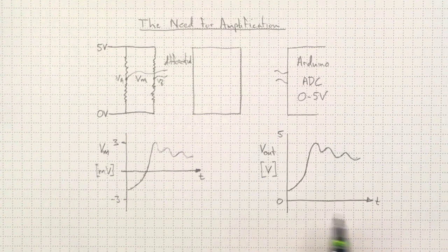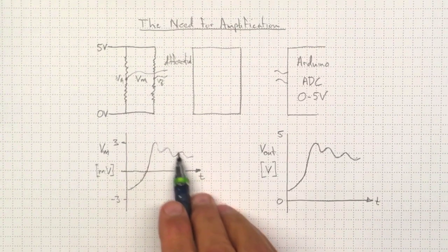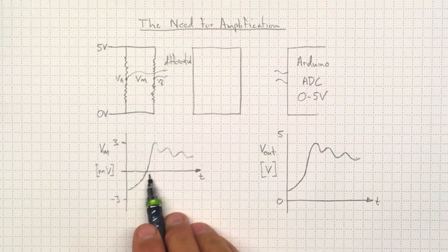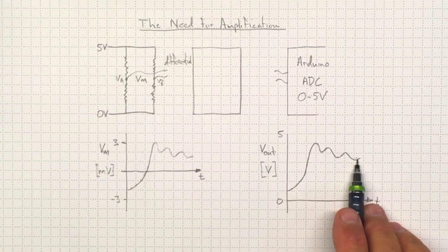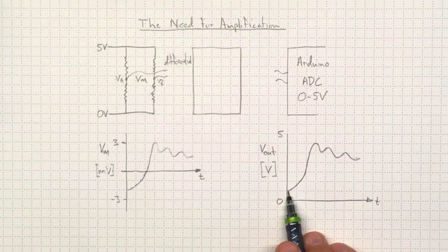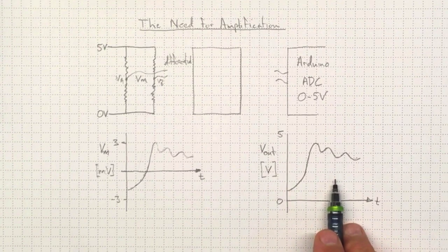That's what we need to be able to do is to translate this really low voltage signal that goes positive and negative into a higher voltage signal that the Arduino can read, and that all stays between 0 and 5 volts.